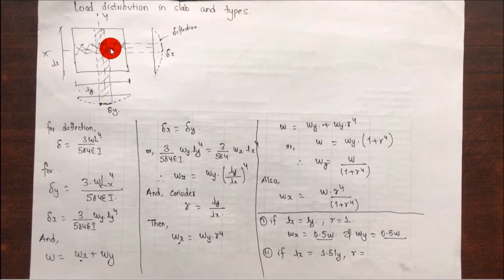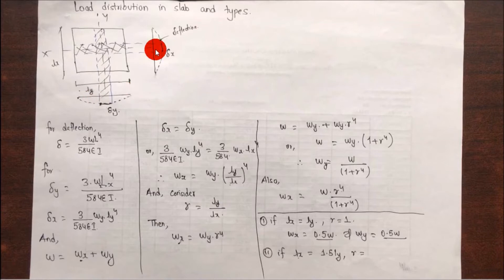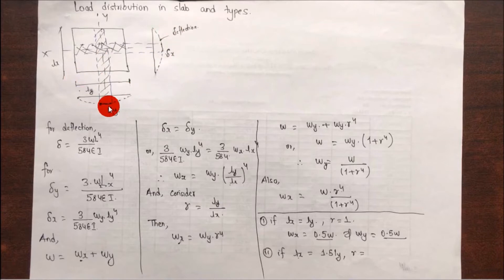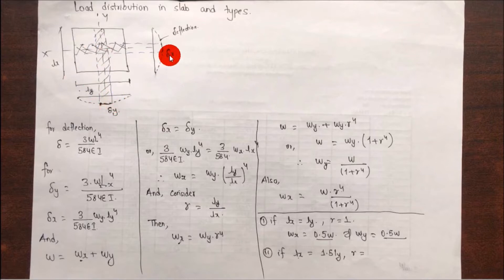On both axes x and y, this will be the deflected shape on the respective axis. This is delta y, the maximum deflection at the midpoint, and that is delta x.